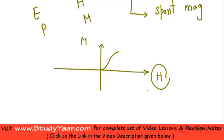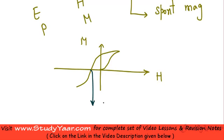Once you increase your magnetic field beyond saturation, there is no further increase in magnetization. Now if you start decreasing your magnetic field, it does not retrace the same path — rather it follows a different path, and when you reach a certain negative magnetic field you have zero magnetization. This negative magnetic field is called your coercive magnetic field.